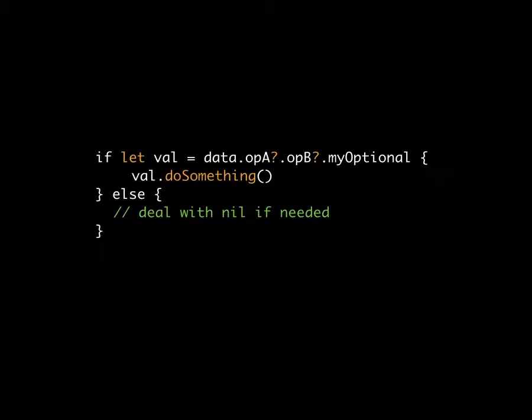The best way to deal with optionals is to use this recommended grammar: you can test and set the optional all inline with an `if`. You say `if let val = myOptional` — using `let` because the optional value won't change — and that will automatically see if the value exists, unwrap it, and place it into the variable `val`. It will run the first statement; if it doesn't exist you can catch it with an `else`. That's always the way I would deal with Swift optionals.